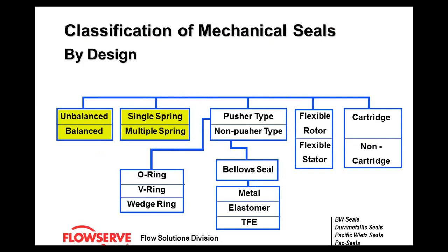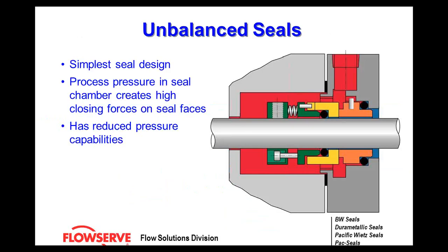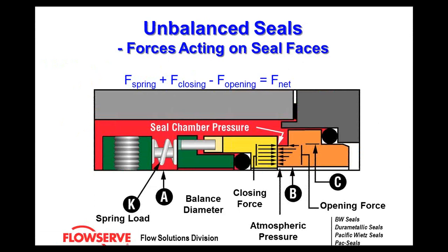Now we'll talk about balance versus unbalance, and multiple spring versus single spring. Unbalanced seals are the simplest designs — you'll see them in internally sealed devices like dishwashers or washing machines. The process pressure in the seal chamber creates high closing forces on the seal. These have reduced pressure capabilities.